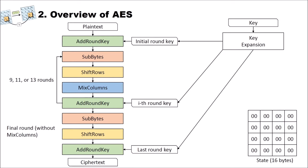Now let's talk about AES. At first, we see here an overview of the AES cipher. The AES cipher is not very complex — it's a quite simple cipher, as you will see. We only have four different building blocks, or five when you count the key expansion. So we have an add round key building block, sub bytes, shift rows, mix columns, and add round key.